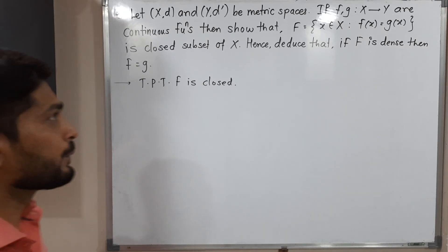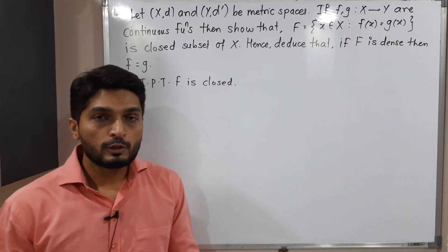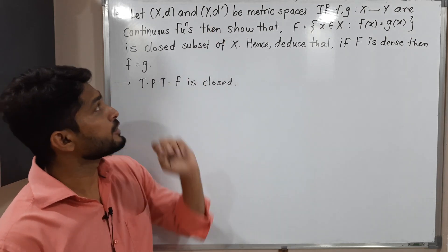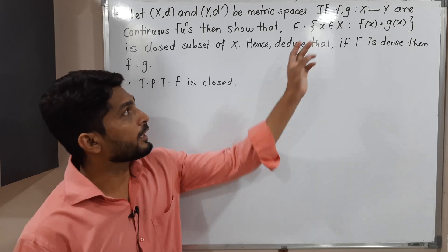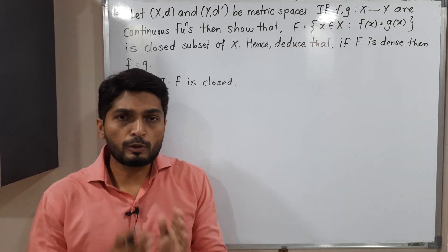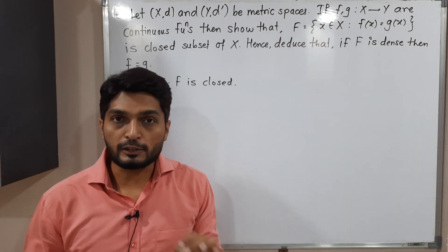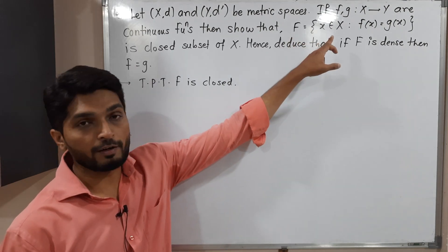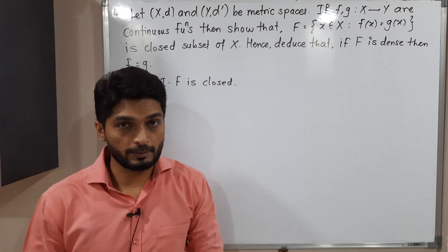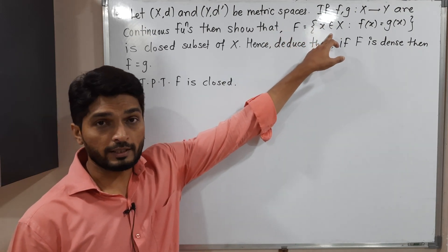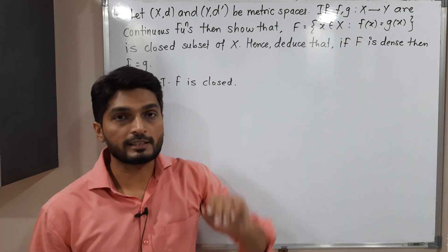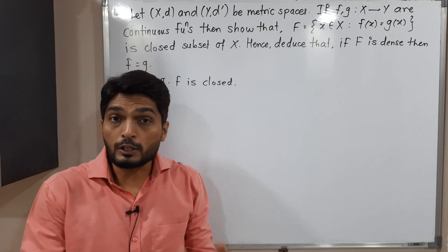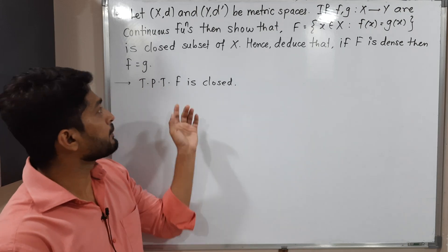In this video we are going to discuss this example. We have two metric spaces X,d and Y,d' and two functions f and g, both defined from X to Y. The most important thing is f and g are continuous functions, and with the help of that we have to prove the set F — defined as the collection of all points of X such that f(x) = g(x) — is a closed set.